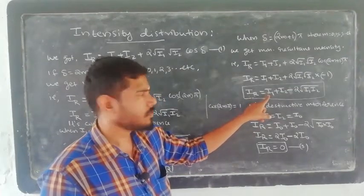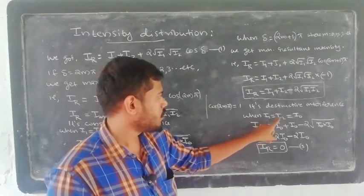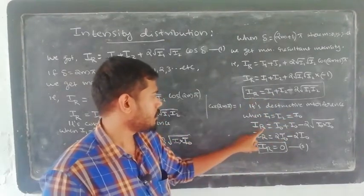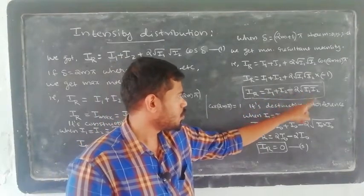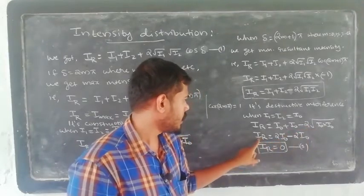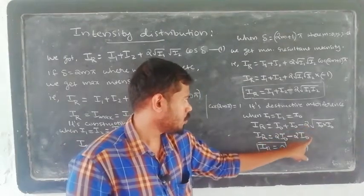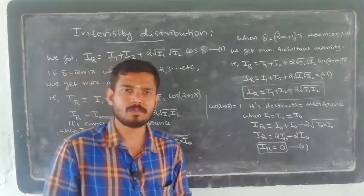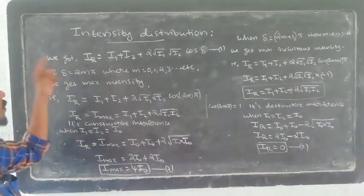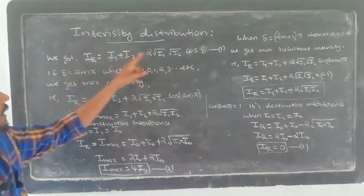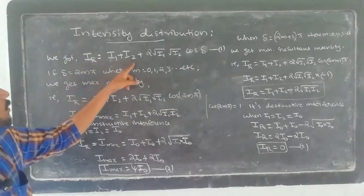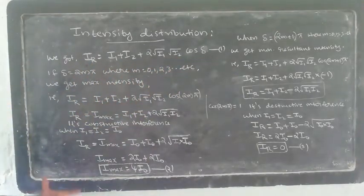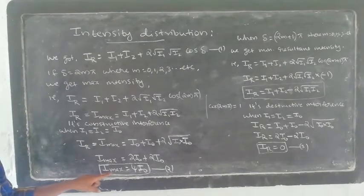When i1 = i2 = i0, the minimum intensity condition gives: I_min = i0 + i0 − 2√(i0·i0) = 2i0 − 2i0 = 0. So the minimum intensity is zero under destructive interference when the two waves have equal amplitudes.